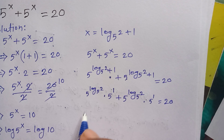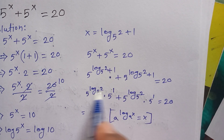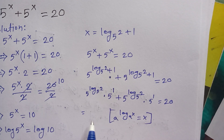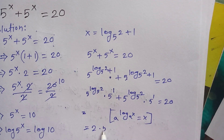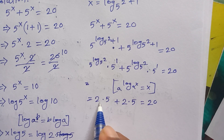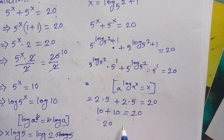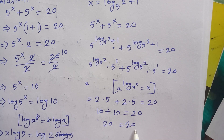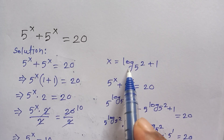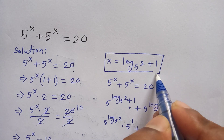This plus can be written as 5 to the 4 log base 5 of 2 times 5 to the 4 times 1, is equal to 20. Now we know that log base a of x used as exponent gives x, so 5 to the log base 5 of 2 equals 2. So we get 2 times 5 to the 4 times 1, which is 5, plus the same gives 2 times 5 equal to 10 plus 10, which is 20 equals 20. Both sides are equal, so the value of X is equal to log base 5 of 2 plus 1. Thanks for watching, please subscribe to my channel for more videos, see you in the next video, bye bye.